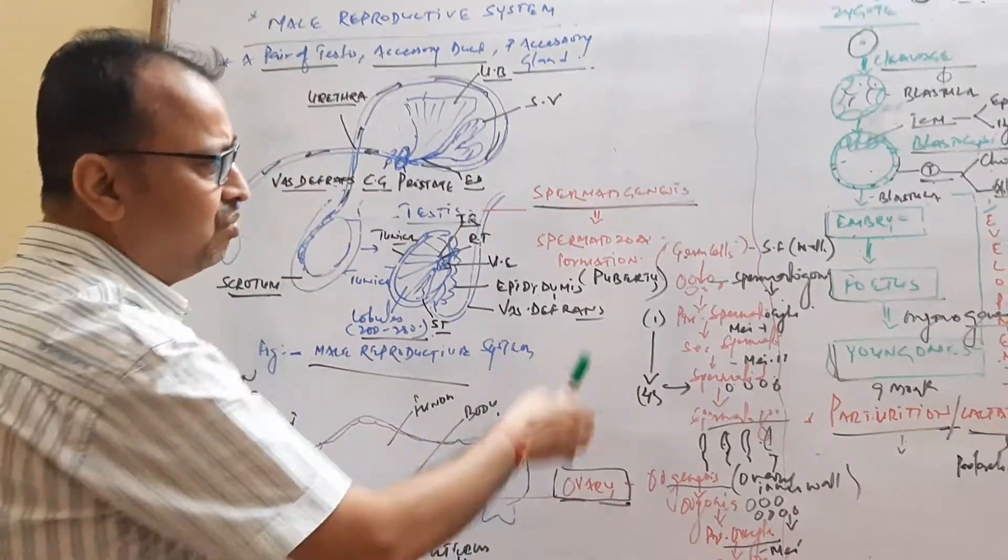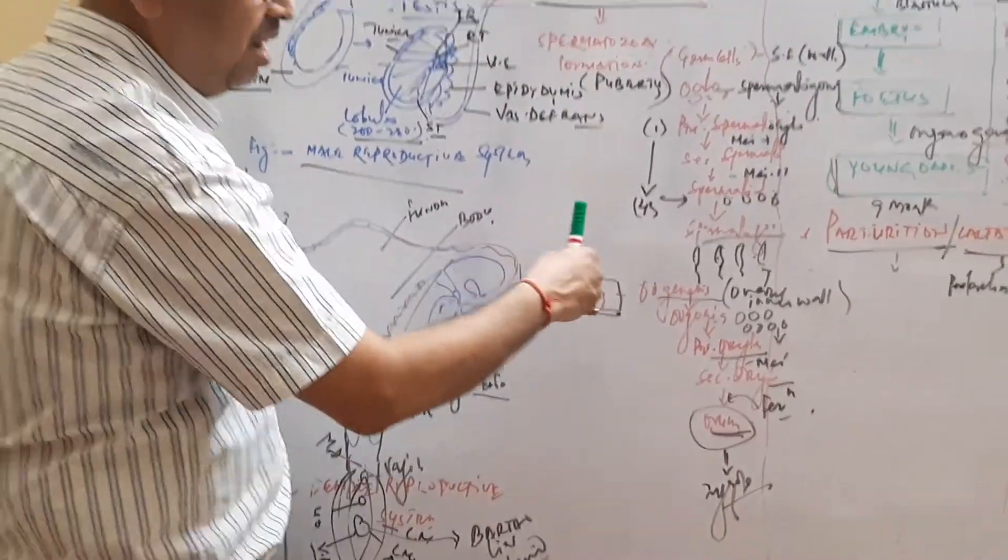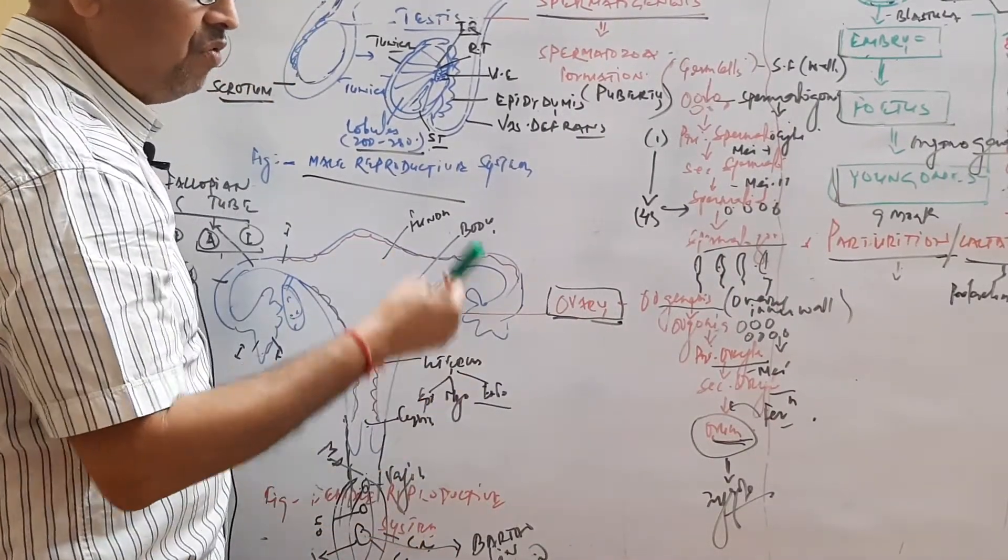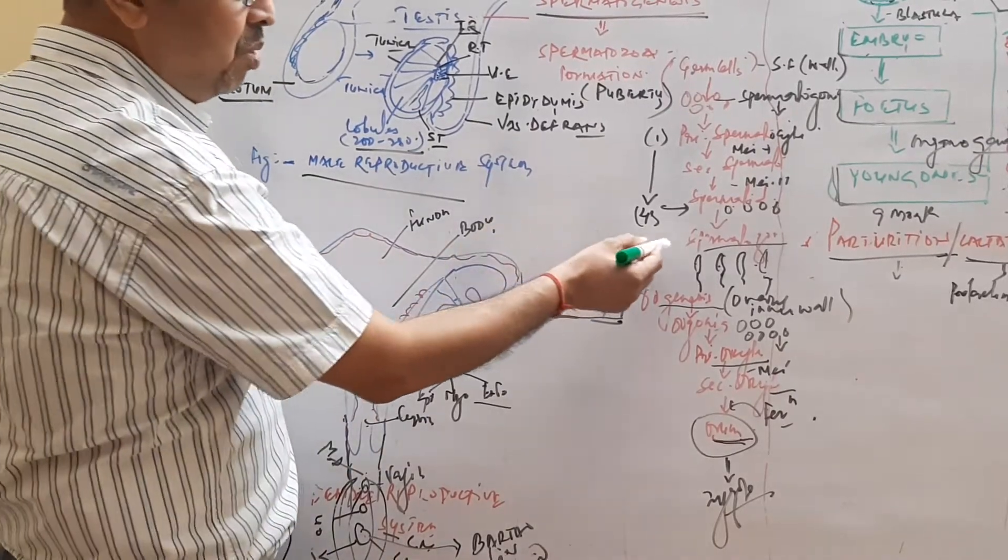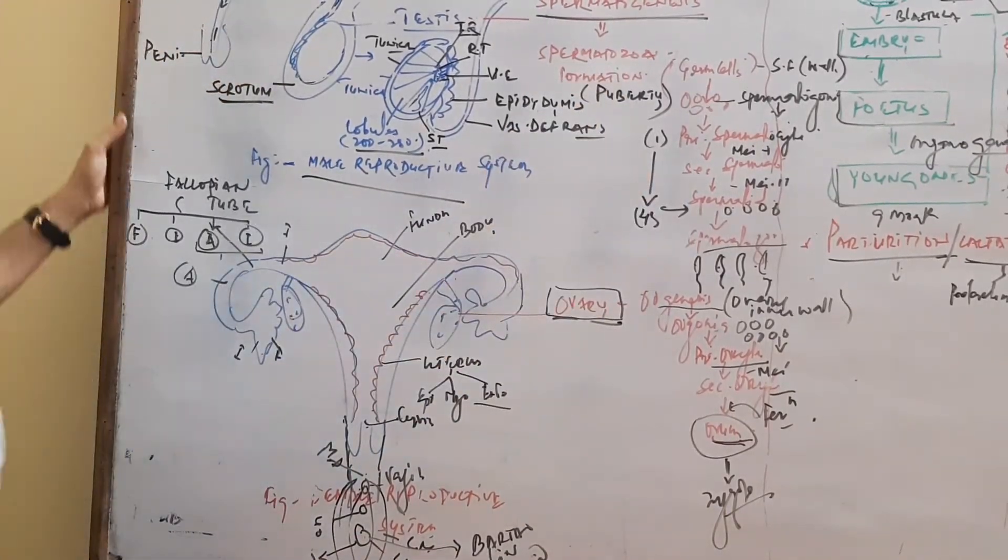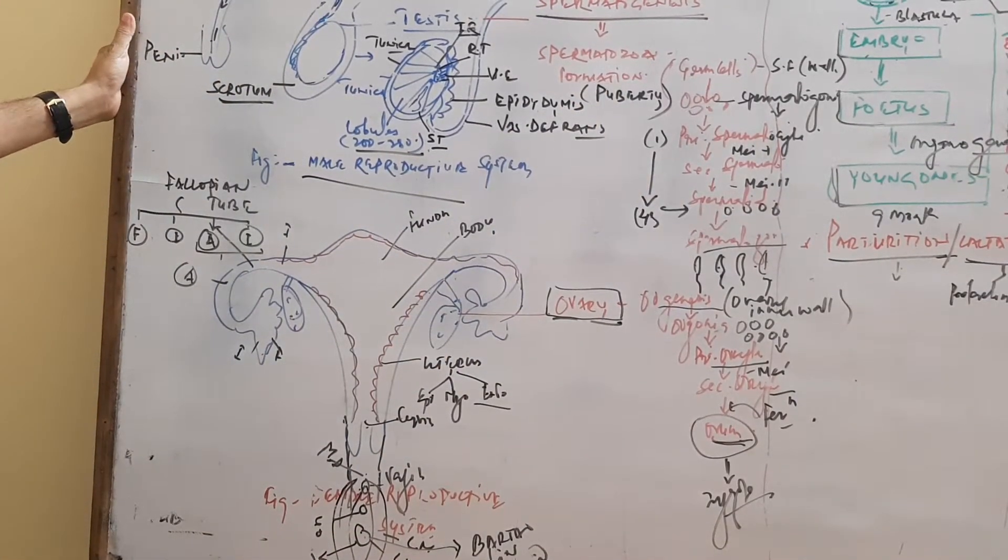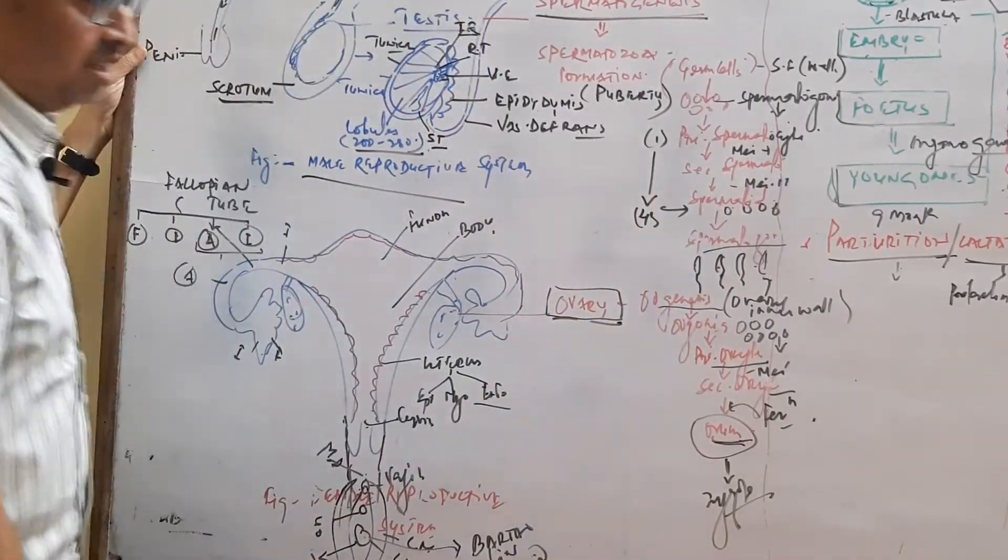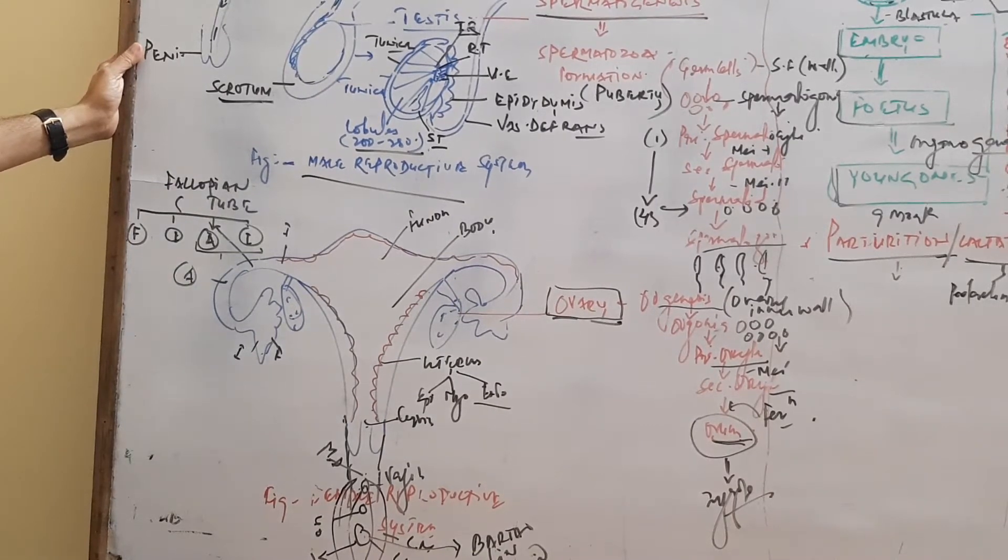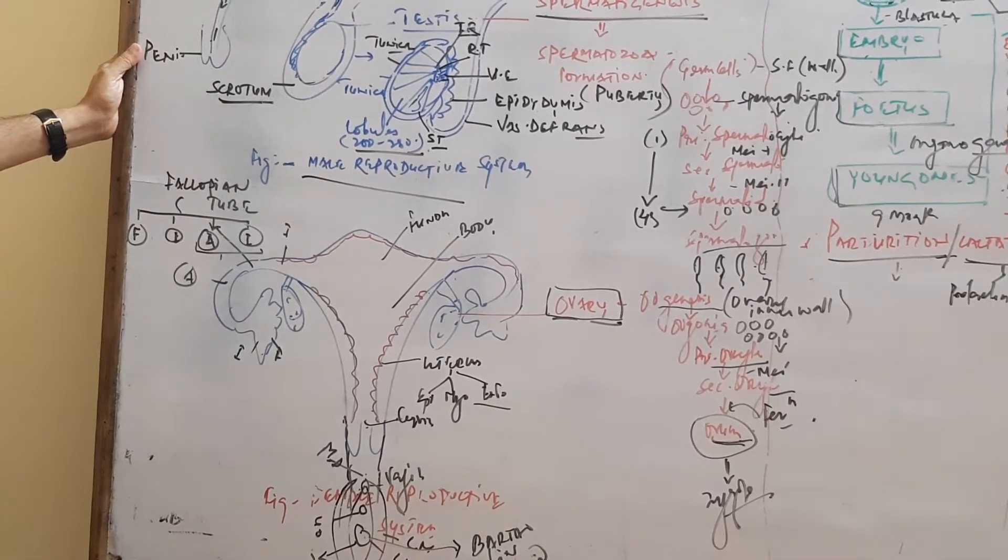Release of spermatozoa from seminiferous tubules is called spermiation. Formation of spermatozoa from spermatids is called spermiogenesis. Release of spermatozoa to the genitalia is called semination.